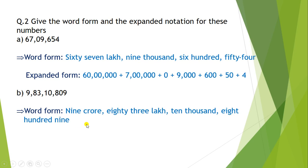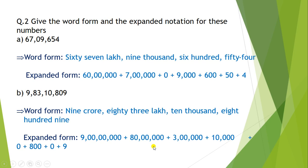Can you write the expanded form for this number? Correct. The expanded form for this number is 9,80,00,000 plus 3,00,000 plus 10,000 plus 800 plus 0 plus 9.